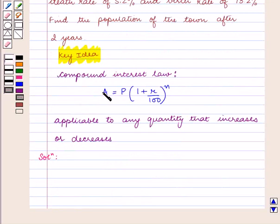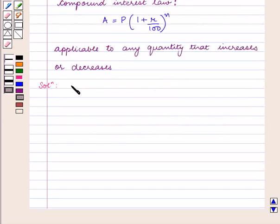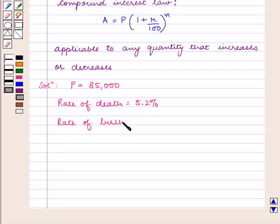As population is a quantity that can increase or decrease, we can apply the compound interest law here. The population P equals 85,000. The rate of death equals 5.2% and the rate of birth equals 13.2%.